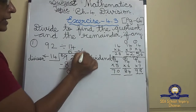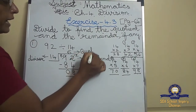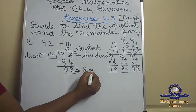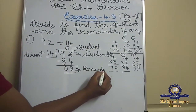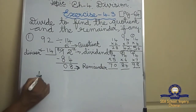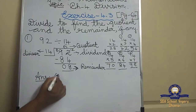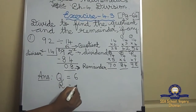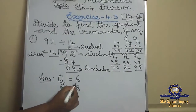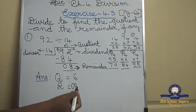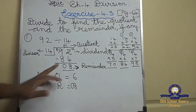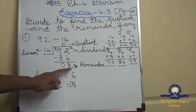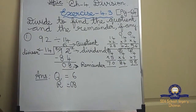So this is the quotient and this is the remainder. The answer: quotient is 6 and remainder is 8. Remember — this is the dividend, this is the divisor, this is the quotient, and this is the remainder.